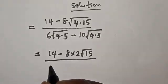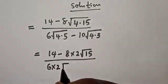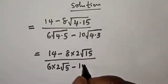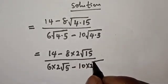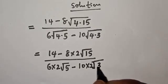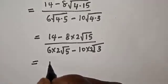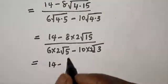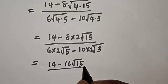Divided by 6 multiplied by square root of 4, which is 2 root 5, minus 10 multiplied by square root of 4, which is 2 root 3.